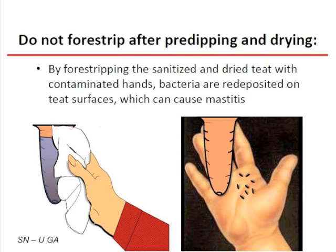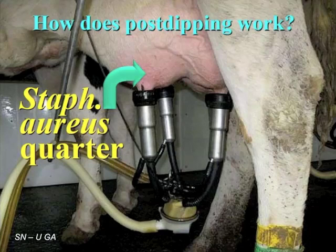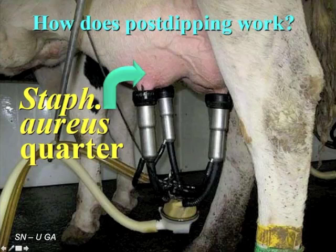Once the teat is clean and dry, don't touch it with your hand — bare or gloved — because there are bacteria on the hand that can recontaminate the teat. If you force strip, do it before pre-dipping. After dipping, work the dip into the teat skin, strip, wipe it off and dry, then put the milker on next without touching. Staph aureus is a contagious bacteria that gets deep into the quarter and can shed intermittently, making it frustrating to manage.